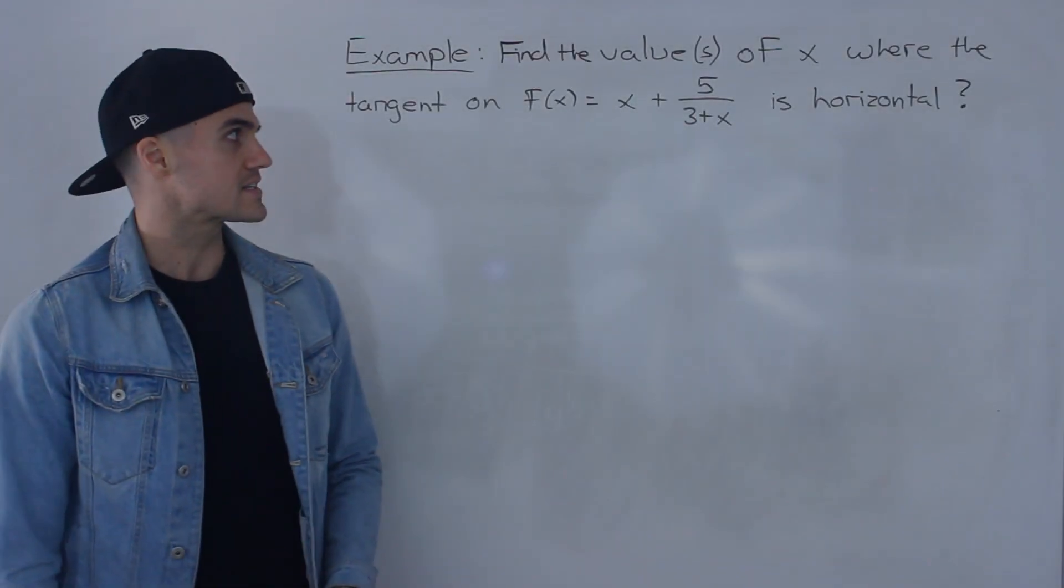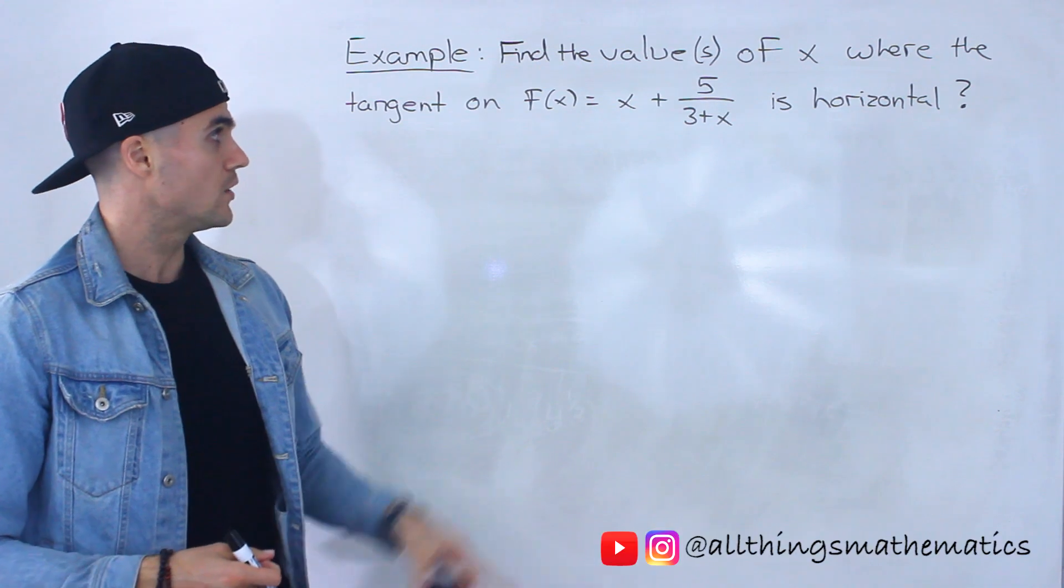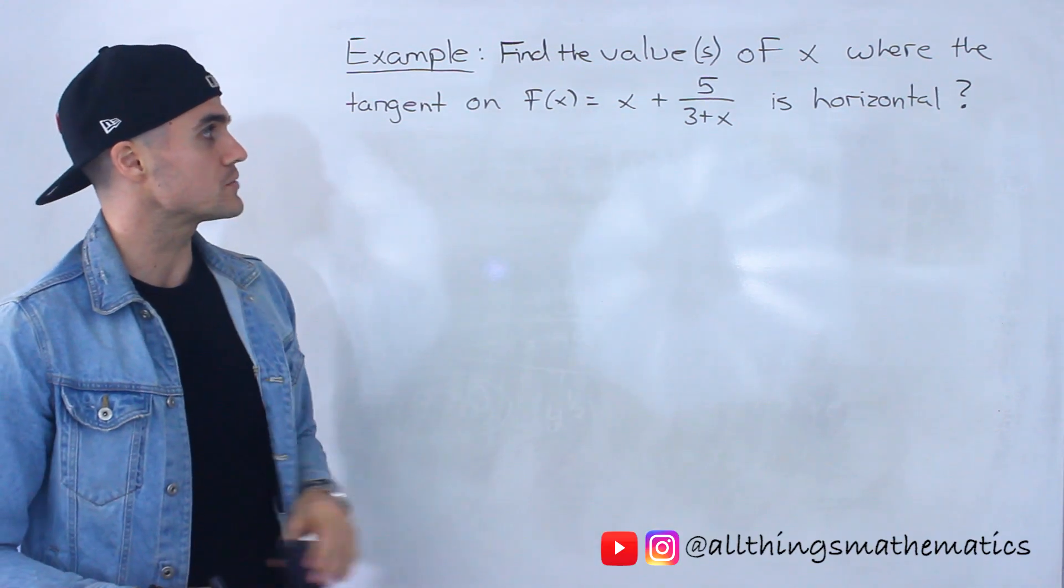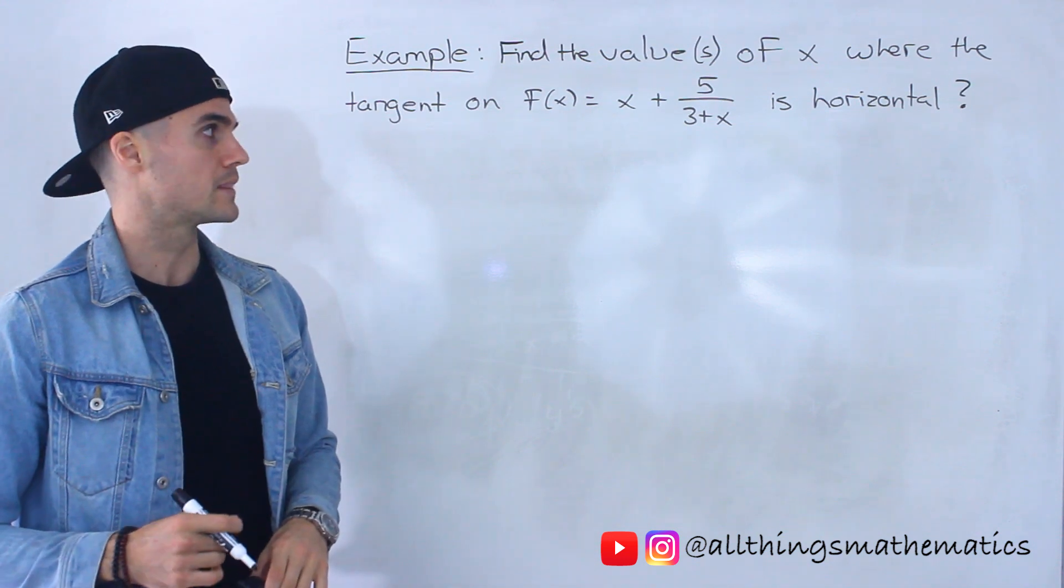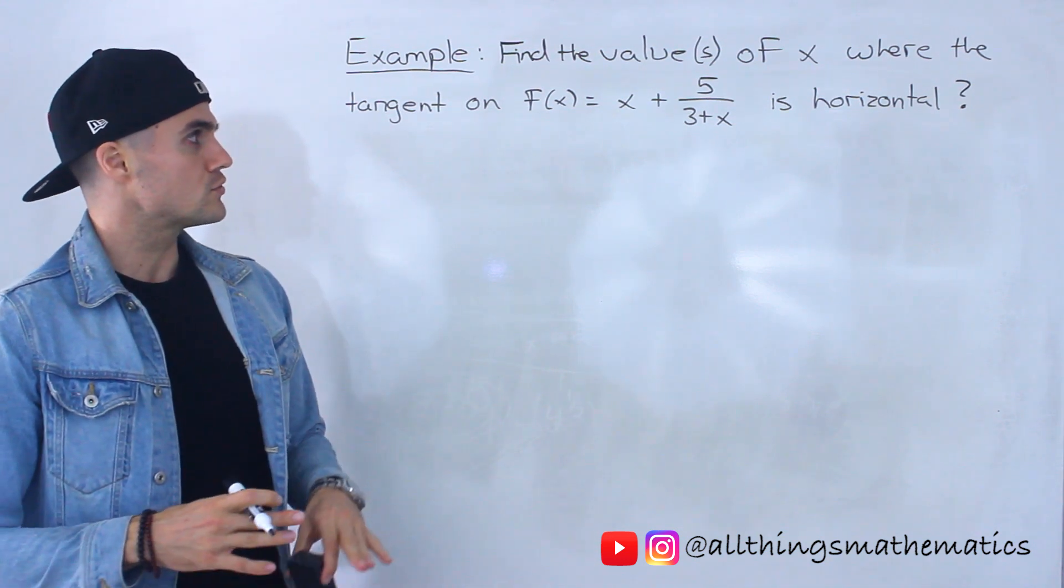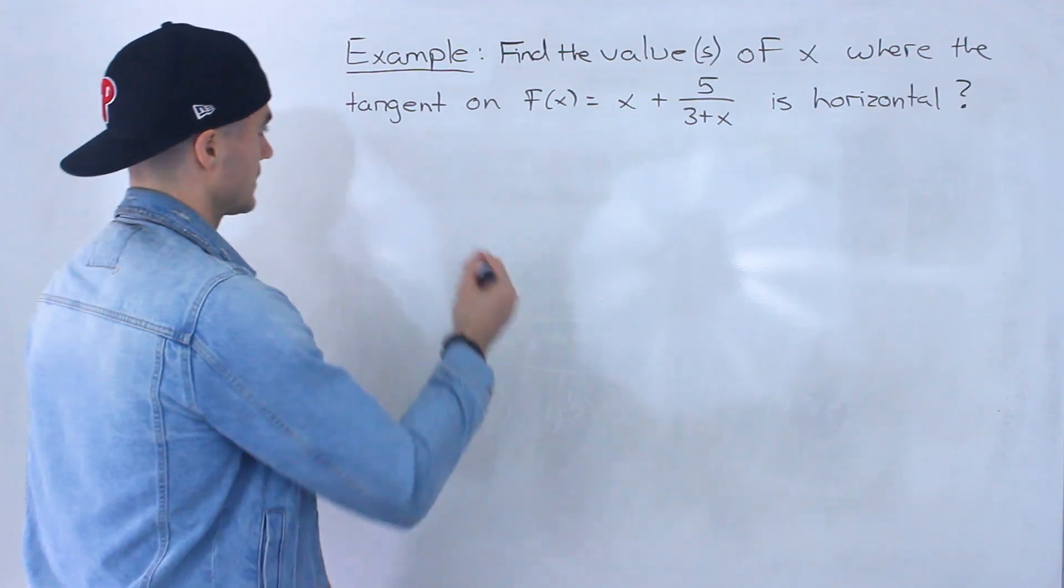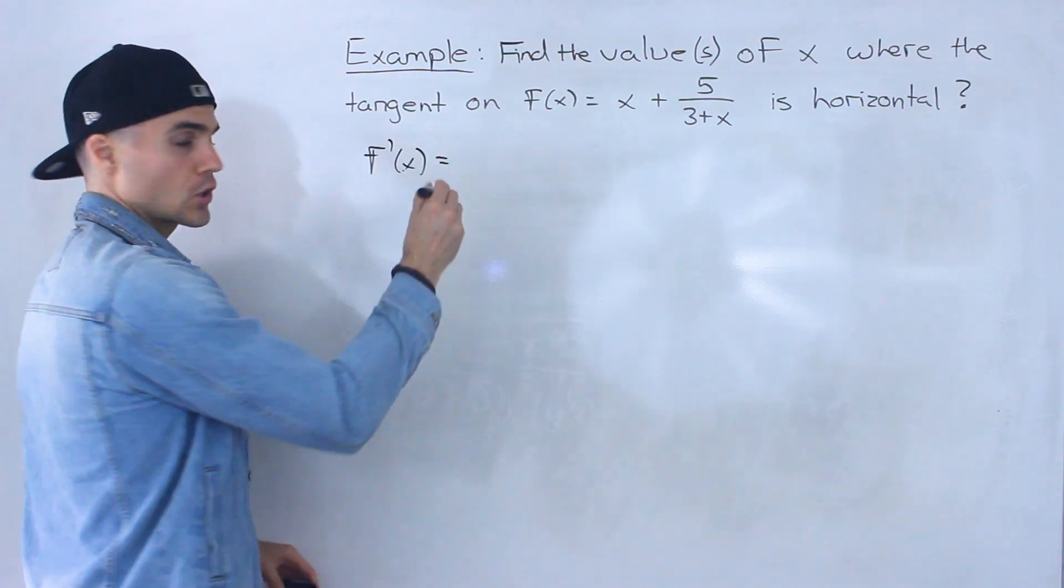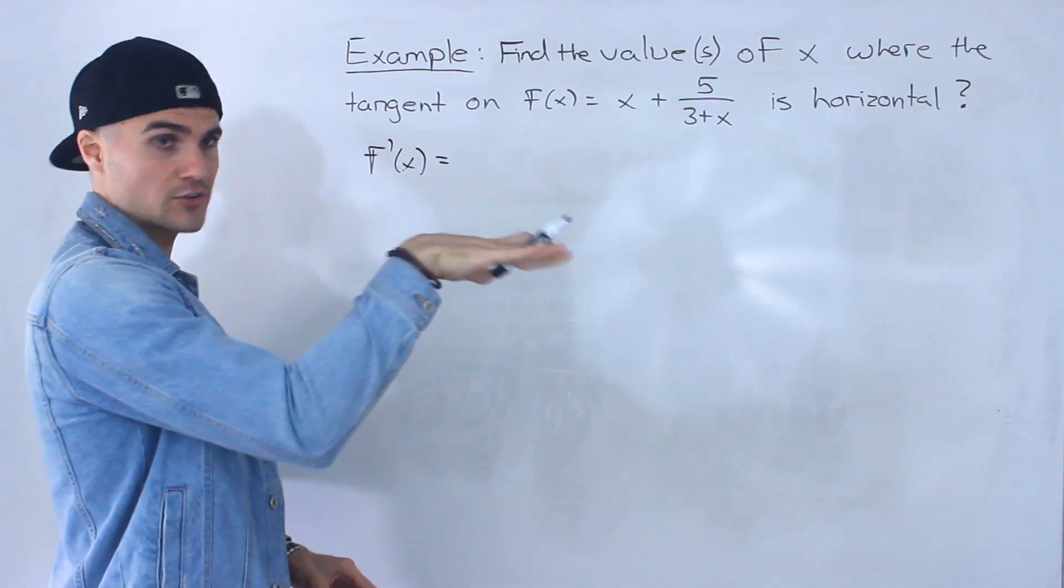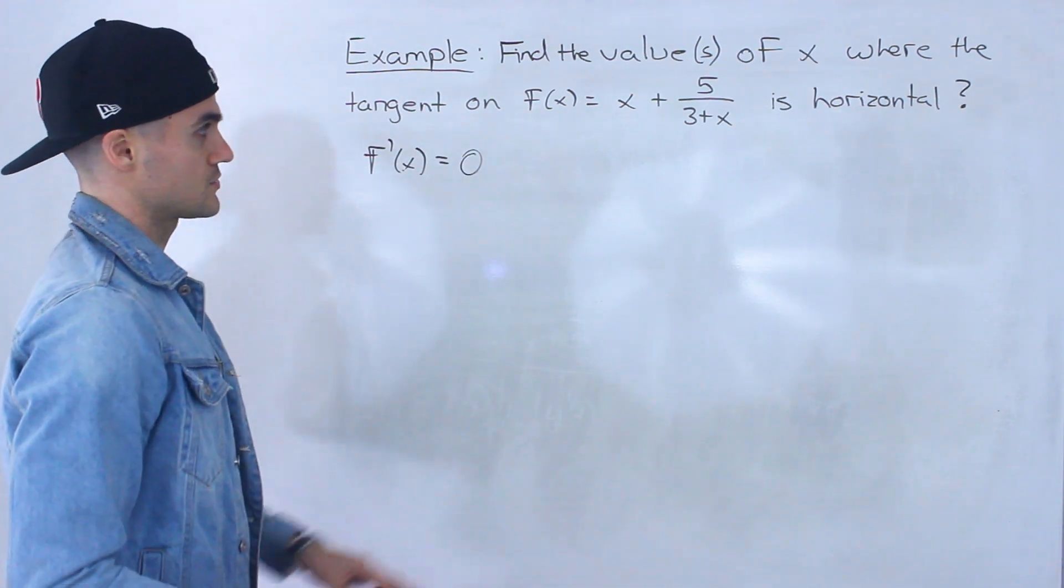Welcome back everyone. In this next example, we have to find the value or values of x where the tangent on this function f(x) = x + 5/(3+x) is horizontal. So to find where the tangent is going to be horizontal, we basically have to find out when is that slope of the tangent going to be 0. A horizontal line has a slope of 0, or when the derivative is equal to 0.